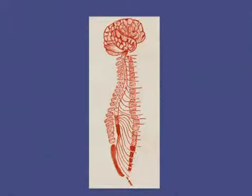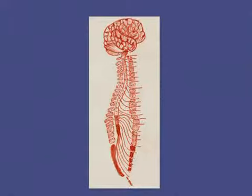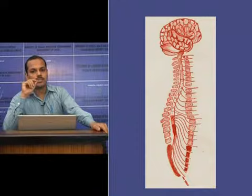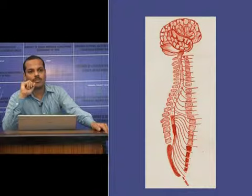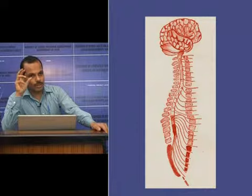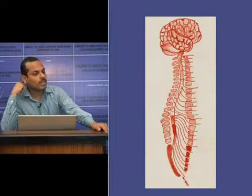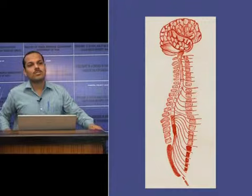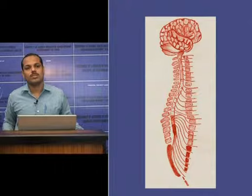This session discusses the spinal cord. The spinal cord lies in the vertebral canal, which provides protection. It extends from the foramen magnum as a continuation of the medulla, and comes down through the vertebral canal to the lower level of L1, or in some cases to the upper level of L2.